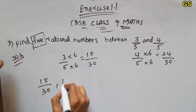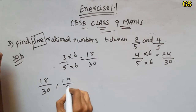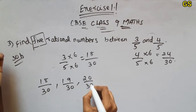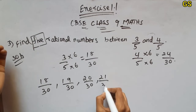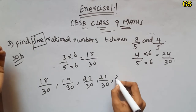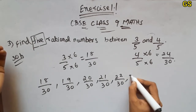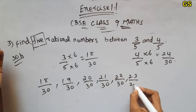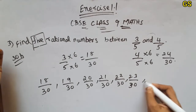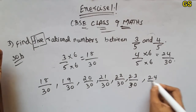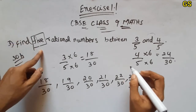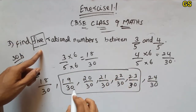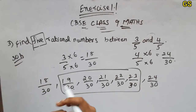Next numbers: 19 by 30, 20 by 30, 21 by 30, 22 by 30, 23 by 30, 24 by 30. That gives us 1, 2, 3, 4, 5 — correct?